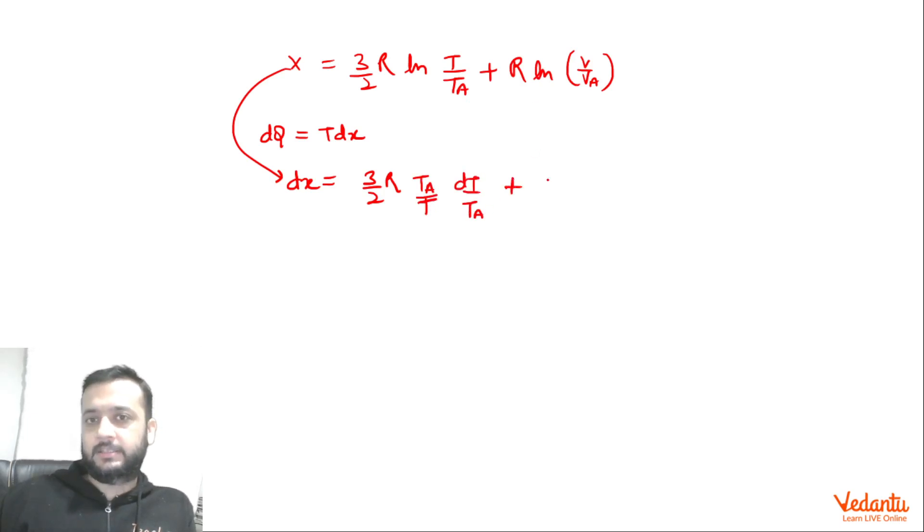Plus this will be R. ln will become Va/V into differentiation of this. That will be dV/Va. Ta, Ta will be gone. Va, Va will be gone. Now, T dX. What is T dX? If you multiply this equation by T, so what do we get? 3/2 R dT plus RT/V dV.